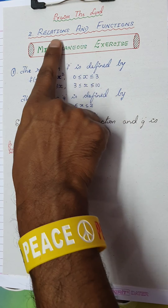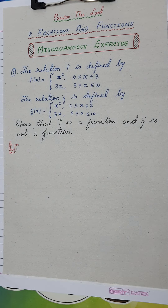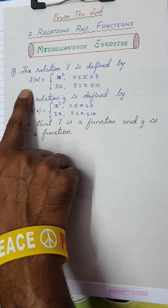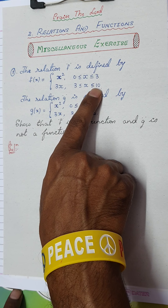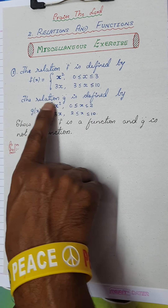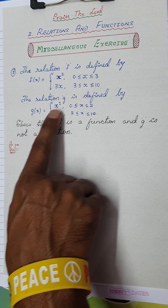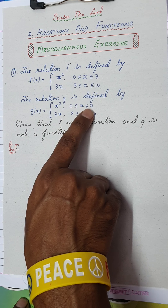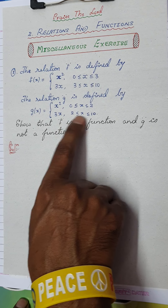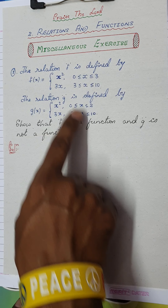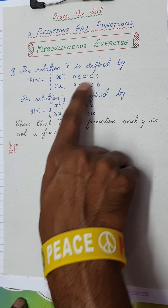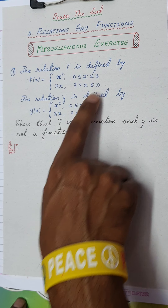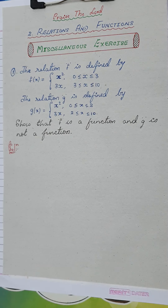The first question from the miscellaneous exercise of Relations and Functions, First PUC: the relation f is defined by f(x) = x² for x in [0, 3] and 3x for x in [3, 10]. Then there is another relation g given by g(x) = x² for x in [0, 2] and 3x for x in [2, 10]. The question is to show that f is a function but g is not a function. The only slight change is the boundary point — 3 for f and 2 for g.